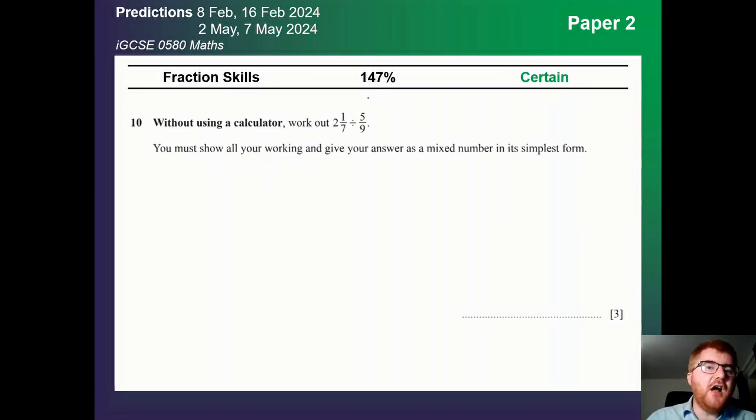And fraction skills are whopping 147%. Perhaps the most important topic at the moment on paper 2. 2025, that will change slightly. And that key phrase without using a calculator. Work out this. This comes up every year. Make sure you're getting all three marks. These are easy marks to get. And you don't want to miss out.